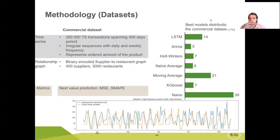We have tested our model on two datasets on two sets of datasets. The first one is commercial dataset with around 250,000 transactions spanning for 100 days. Each transaction time series represents audit amount of the product. As a relationship graph we have binary encoded supplier to restaurant graph with 400 suppliers and 3000 restaurants. Usually in this case the naive model works most of the time but still in some cases for some products other models win by a large margin.